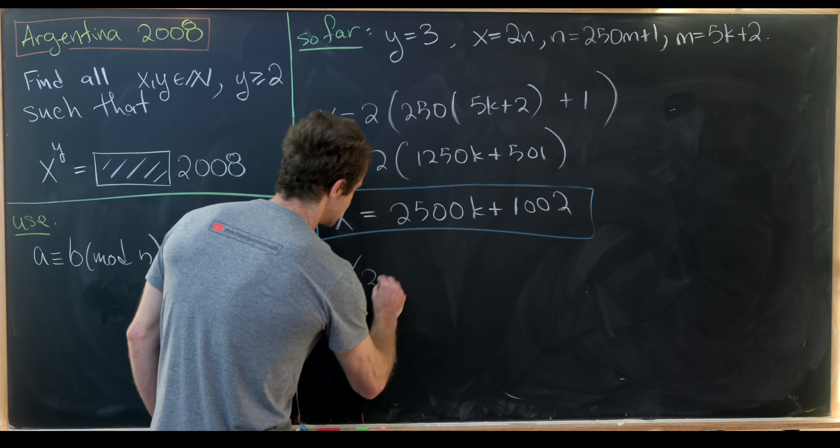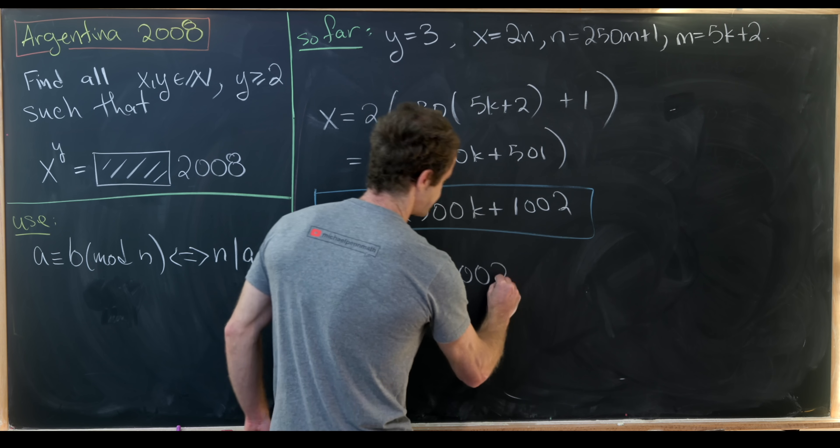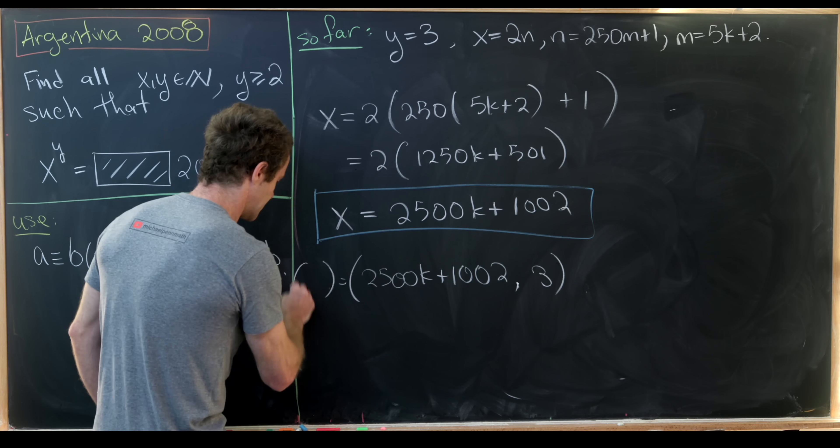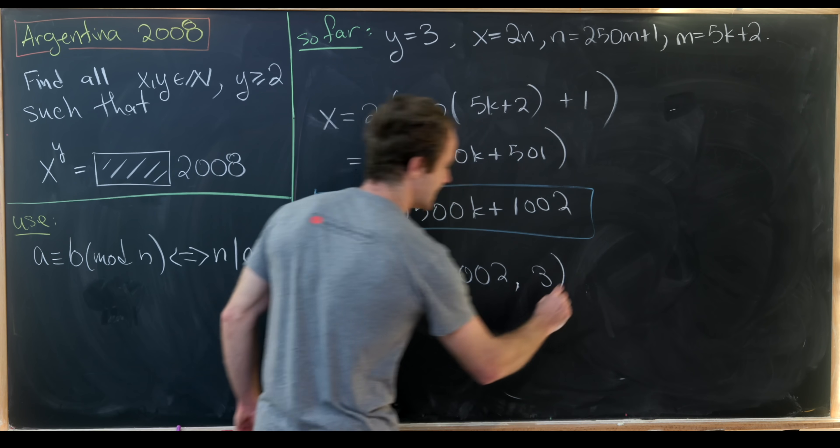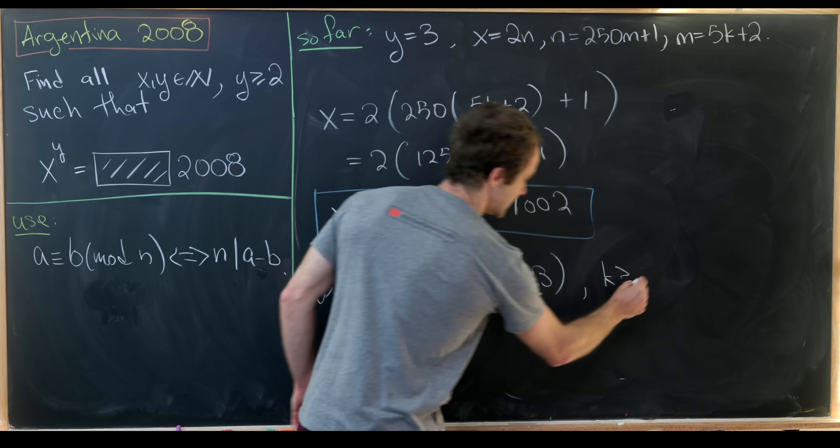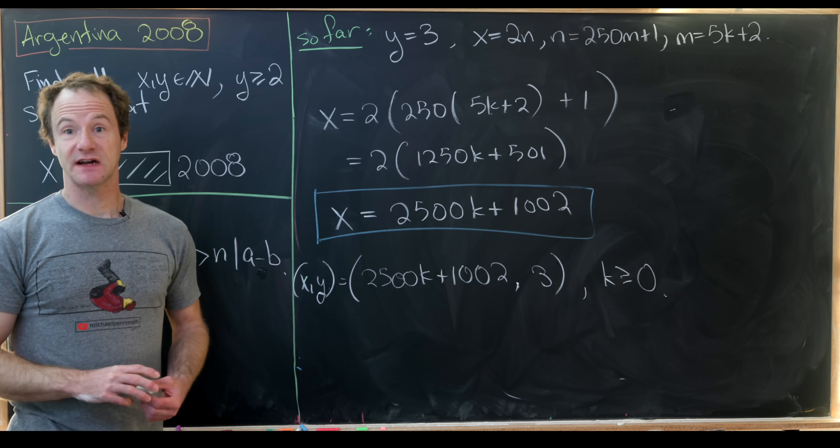We have solutions 2500k plus 1002 comma 3 for all k. And that's a good place to stop.